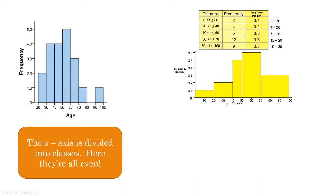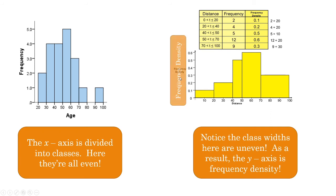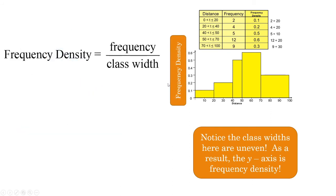In that situation you still have your classes being the x-axis, but the y-axis now is frequency density. Frequency density describes how much frequency occurs in that class, and the way you calculate it is just frequency divided by the class width. You can see that little calculation being done worked out over here on the right.